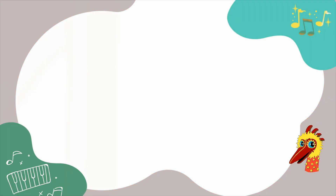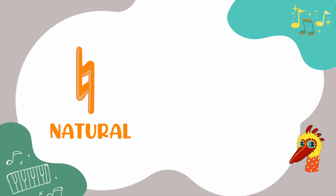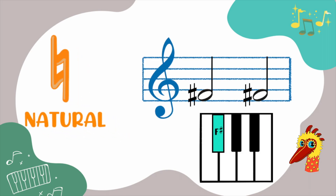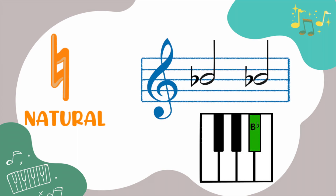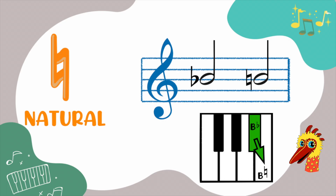That's interesting! What about natural? What does it do? A natural is an accidental which is used to revert a flat or a sharp note back to its original note. In other words, it represents the unaltered pitch of that note. I see! Cool!